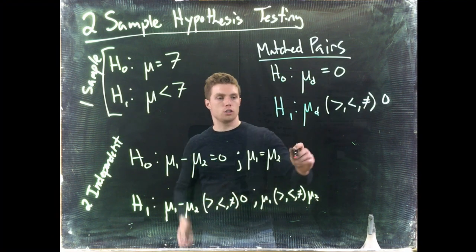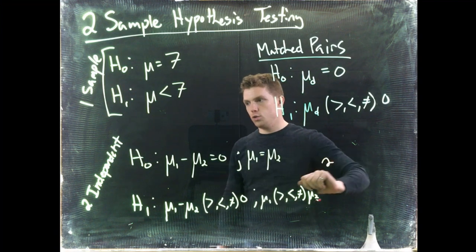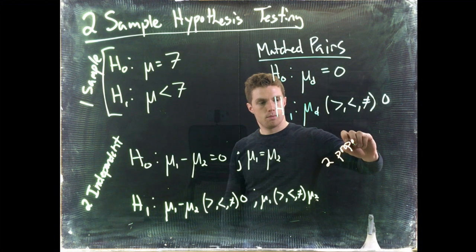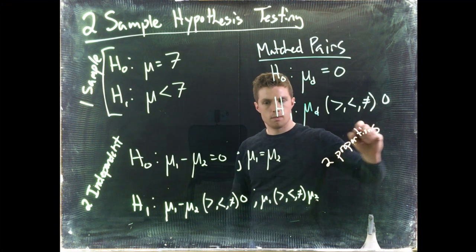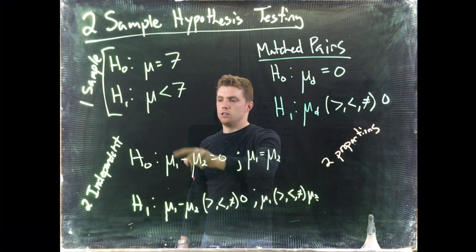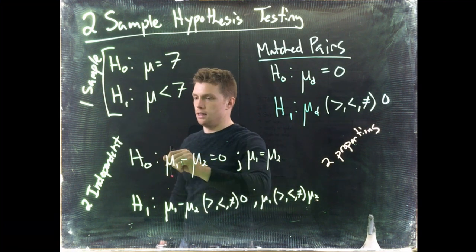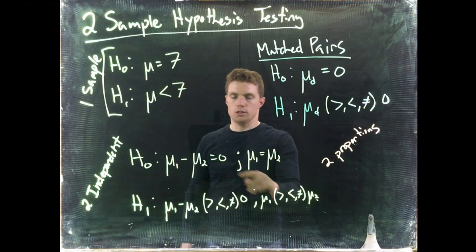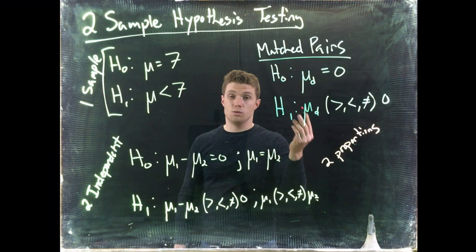Okay, finally, for our proportions. So we've got two proportions. Okay, you can take it similarly to how we saw the two independent means, how there's two different ways you could write it. You can write two different ways with the proportions too, but I'm just going to write it in the format how I like.